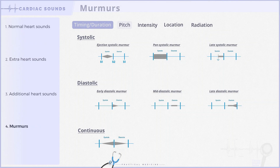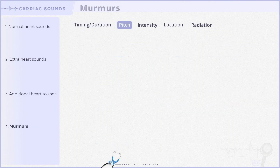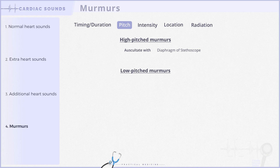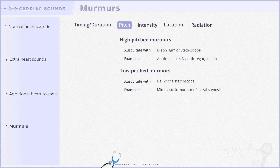Now let's discuss murmurs categorized by their pitch. There are two main types: high-pitched and low-pitched murmurs. High-pitched murmurs are easily audible using the diaphragm of a stethoscope — common examples include murmurs of aortic stenosis and aortic regurgitation. On the other hand, low-pitched murmurs require attentive listening with the bell of a stethoscope, such as the mid-diastolic rumble of mitral stenosis.